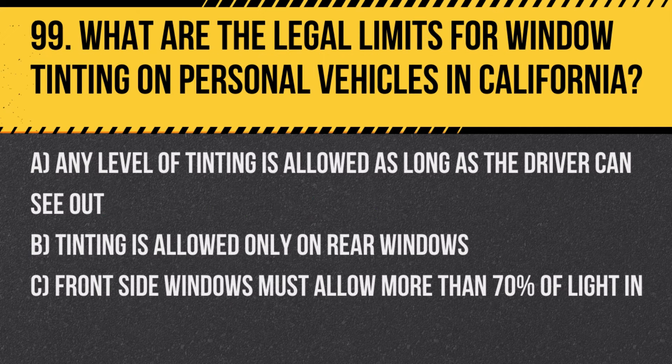Question 99: What are the legal limits for window tinting on personal vehicles in California? A. Any level of tinting is allowed as long as the driver can see out. B. Tinting is allowed only on rear windows. C. Front side windows must allow more than 70% of light in. Answer: C. Front side windows must allow more than 70% of light in. This regulation ensures sufficient visibility for safe driving.